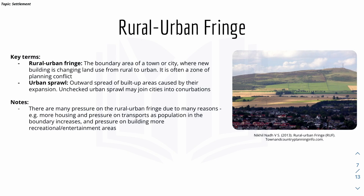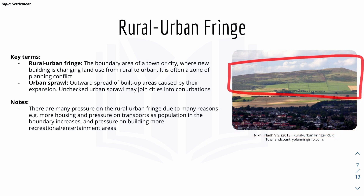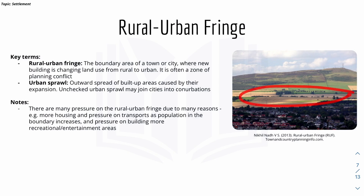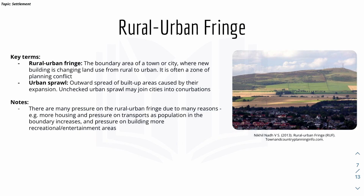The rural-urban fringe is basically the boundary area of a town or city where new building is changing land use from rural to urban — in short, where the rural area meets the urban area. There are many pressures on the rural-urban fringe, including demand for more housing, pressure on transport as the boundary population increases, and pressure to build more recreational or entertainment areas.